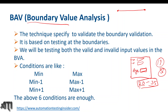How do you derive test cases using boundary value analysis? The minimum value is 20 and maximum is 35. So: minimum minus 1 = 19, minimum = 20, minimum plus 1 = 21; maximum minus 1 = 34, maximum = 35, maximum plus 1 = 36. These are the six test cases. No need to test every value like 20, 21, 22, 23 up to 35 — we derive test cases only based on boundary values.